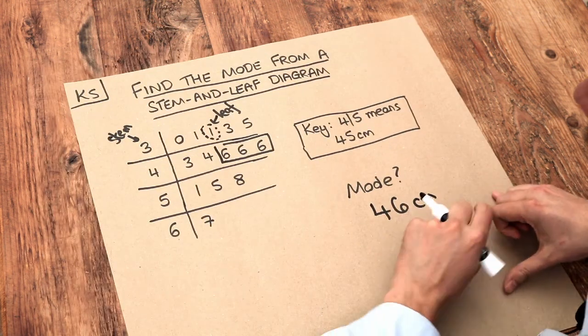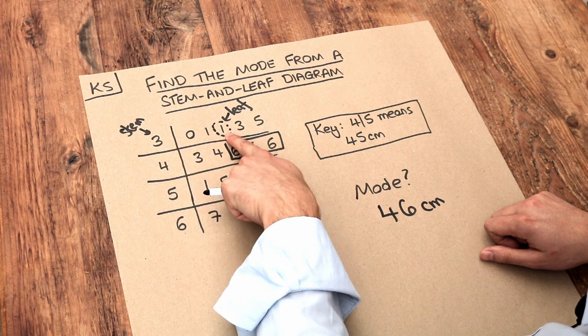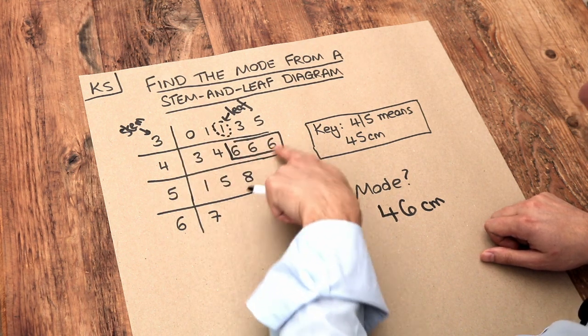Let's just check that no other value occurs more frequently. Well, we've got these two 1s here, so we've got 31 and 31 centimeters, but we've got three repeated values here, so that is going to be the mode.